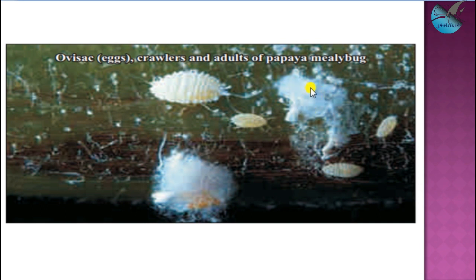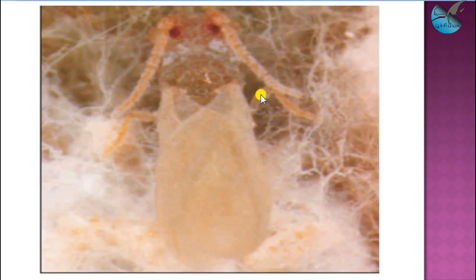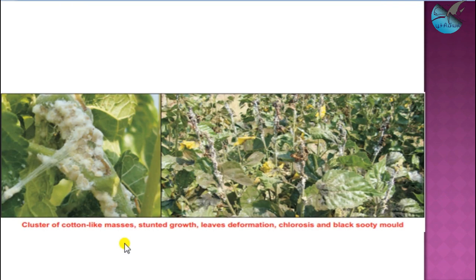The emerged crawlers are the young nymphs. As they mature, they form winged adults, which usually develop when the population is high, to migrate to nearby areas. This particular mealy bug is quite common when there is papaya cultivation nearby.